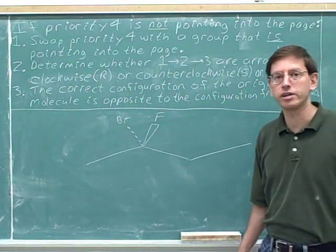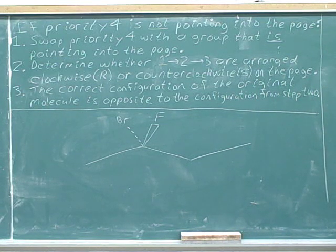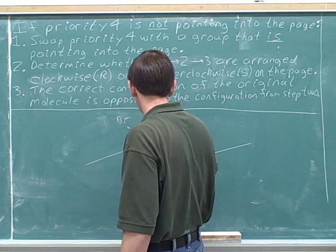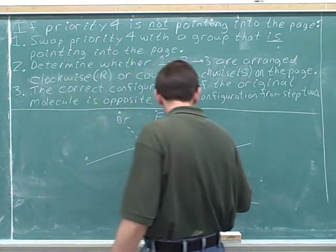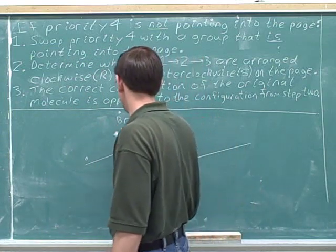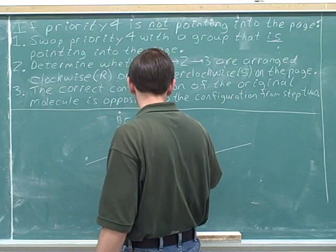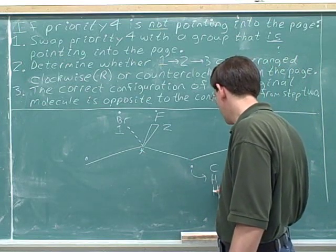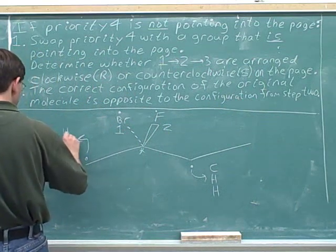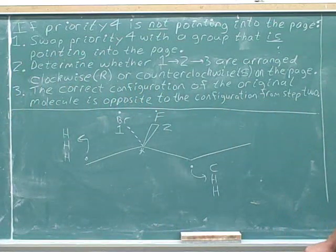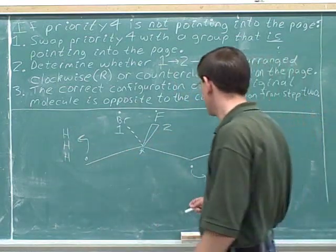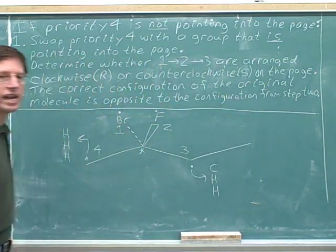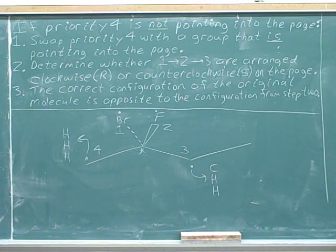Determine whether this stereocenter is R or S. Let's put an asterisk in for the stereocenter and dot the four atoms directly connected to it. Bromine has the highest atomic number — number one. Fluorine has the next — number two. The carbon on the left is tied with the carbon on the right. The carbon on the right is attached to a carbon and two hidden hydrogens; the carbon on the left is attached to three hidden hydrogens. The first point of difference: this carbon beats this hydrogen. So the right-hand group gets number three priority and the left-hand group gets number four. Now let's erase the work we just did.